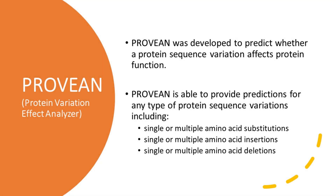PRUVIAN was developed to predict whether a protein sequence variation affects protein function. PRUVIAN is able to provide predictions for any type of protein sequence variations, including single or multiple amino acid substitutions, single or multiple amino acid insertions, and single or multiple amino acid deletions.